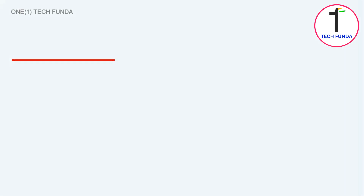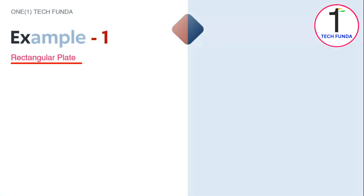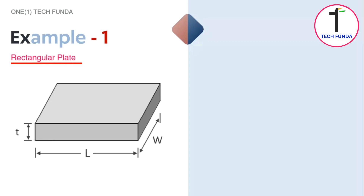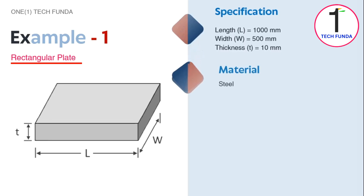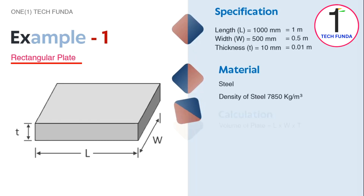Now let's see the example of a rectangular plate. The specifications are as follows: length 1000 mm, width 500 mm, and thickness 10 mm. Material is steel. First, we will convert all dimensions into meters, and the density of steel is 7850 kg per cubic meter.